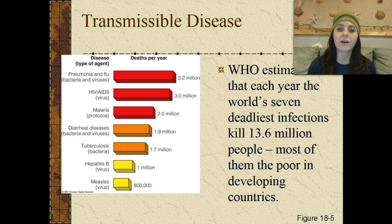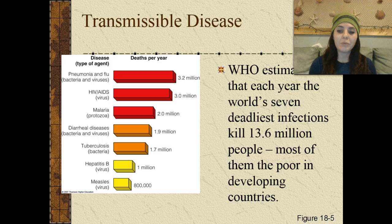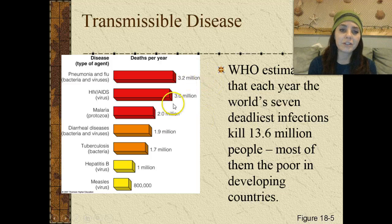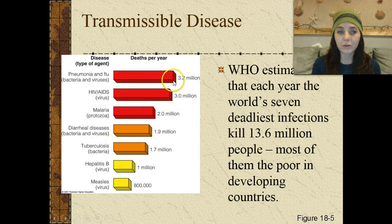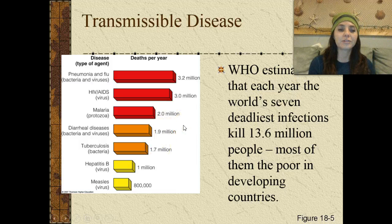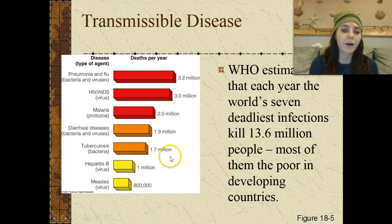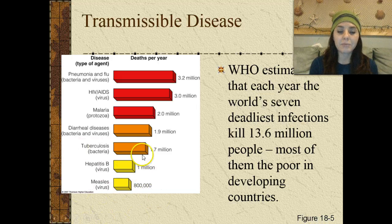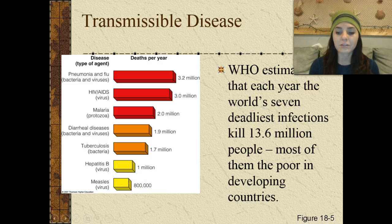The World Health Organization estimates that each year, the world's seven deadliest infections kill about 13 million people, and most of them are in poor and developing countries. There are about 3.2 million deaths due to pneumonia and the flu, about 3 million for HIV/AIDS, 2 million die of malaria, about 2 million die of diarrheal diseases, 1.7 million are due to tuberculosis, hepatitis B accounts for about 1 million deaths a year, and the measles virus accounts for about 800,000 deaths per year.